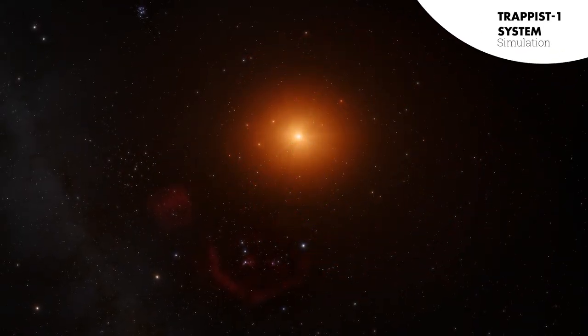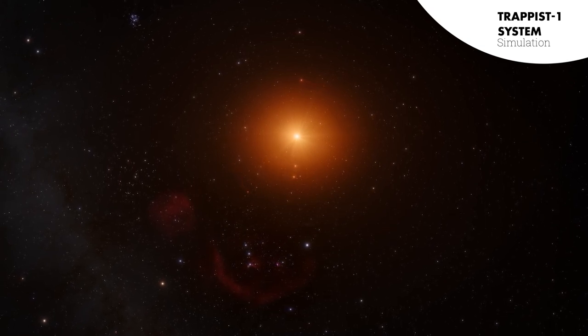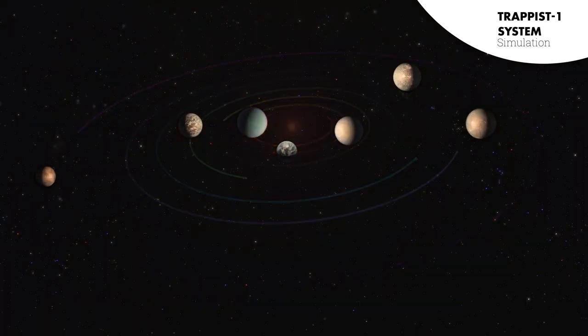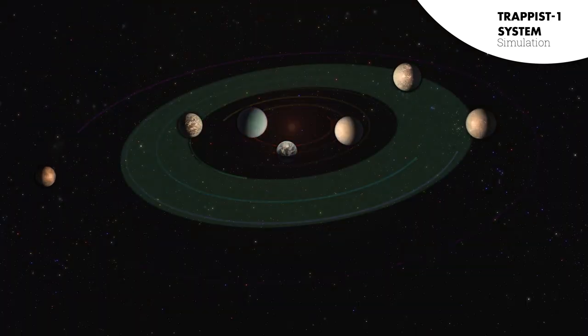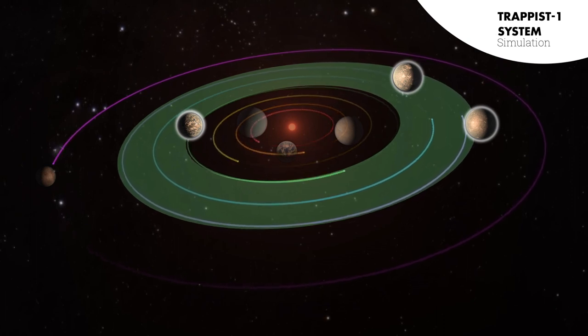So now that we've found planets, how do we learn more about them? What are they like? Would we want to go there? The TRAPPIST-1 system has seven Earth-sized planets, with three of them in the habitable zone, but we know very little about their atmospheres.